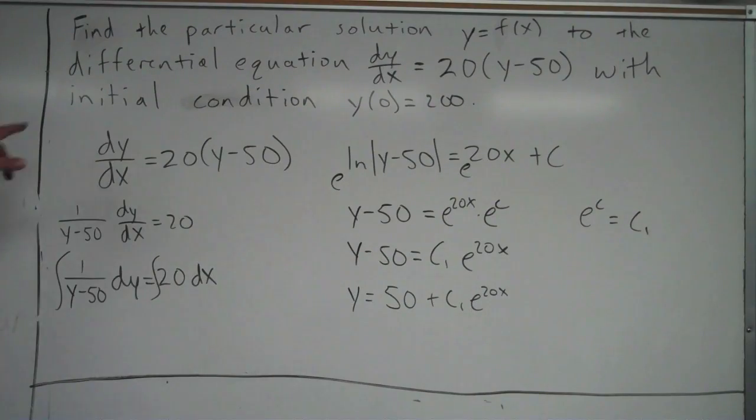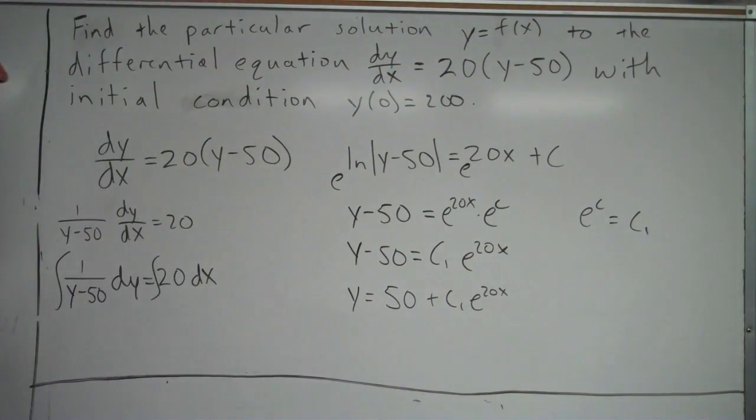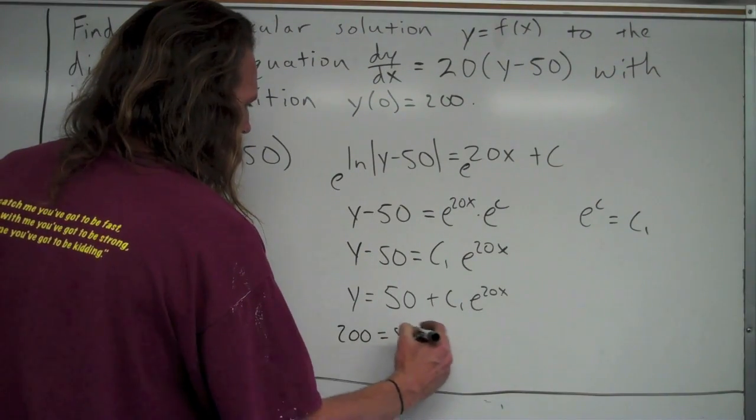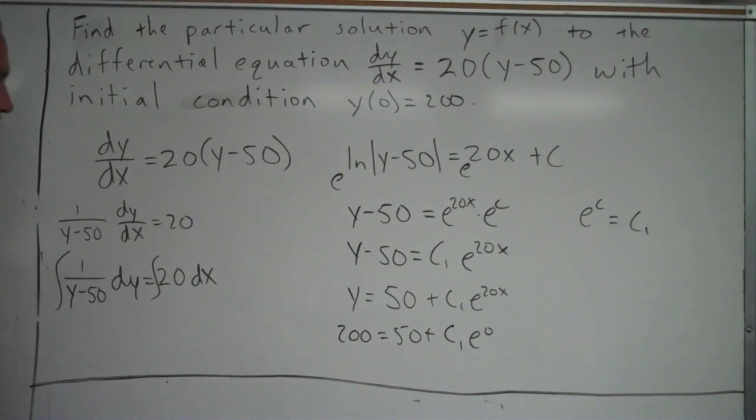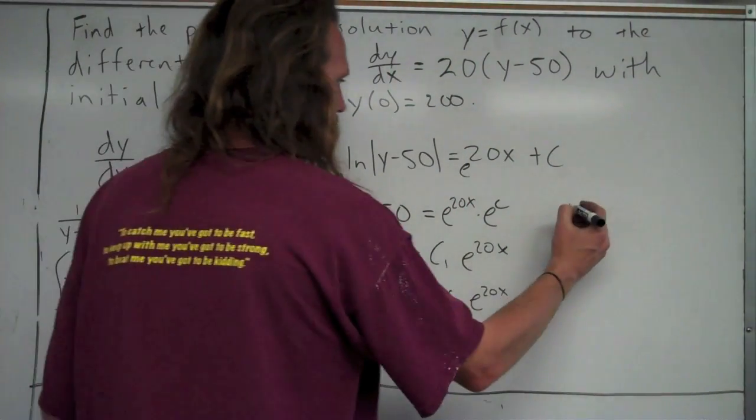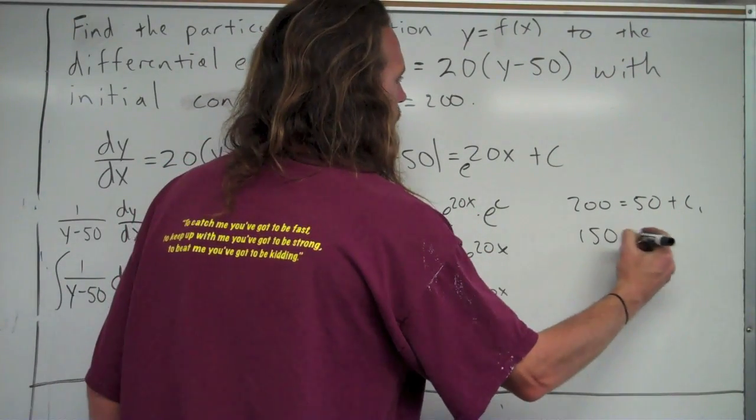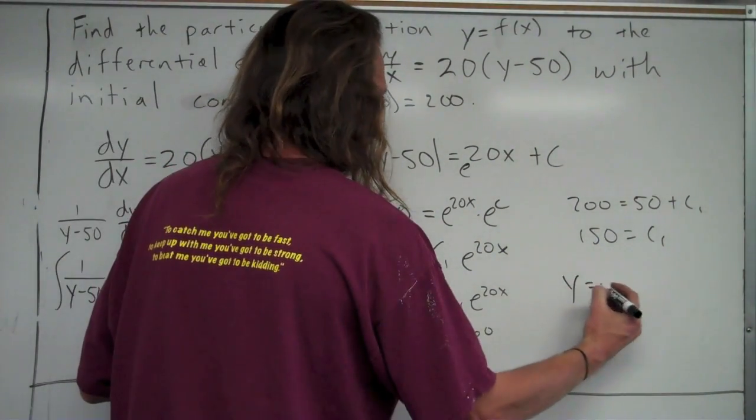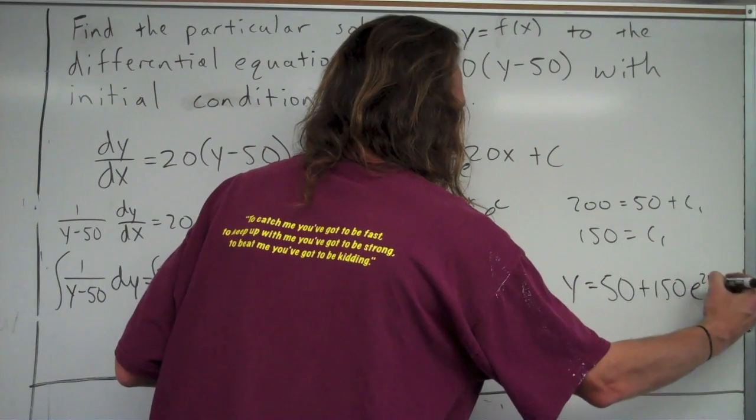Now what I need to do is use my initial condition. I'm going to plug 0 in for x and 200 in for y. So, when I do that, I get 200 is equal to 50 plus c1 e to the 0. And e to the 0 is just 1. I can just rewrite this as 200 equals 50 plus c1. So, when I subtract the 50, I get 150 is equal to c1. I'll take that and plug it back in for c1 to get y is equal to 50 plus 150 times e to the 20x.